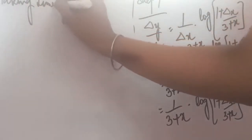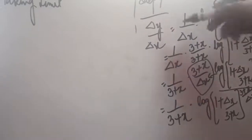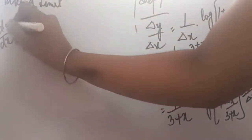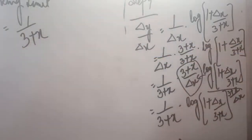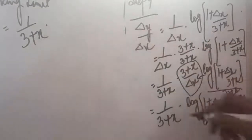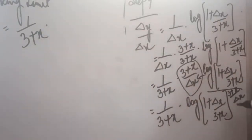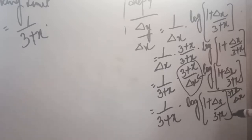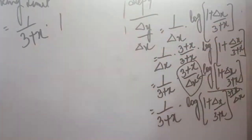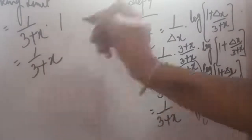Now we will apply the last step: taking the limit. After taking the limit, on the left hand side we have delta y upon delta x, so it will be converted into differentiation. On the right hand side, 1/(3 + x) will not be affected. Now delta x approaches 0, so the power (3 + x)/delta x becomes infinite, but log(1 + 0) raised to that power — since anything raised to power 0 gives 1 — so ultimately our answer is 1/(3 + x).